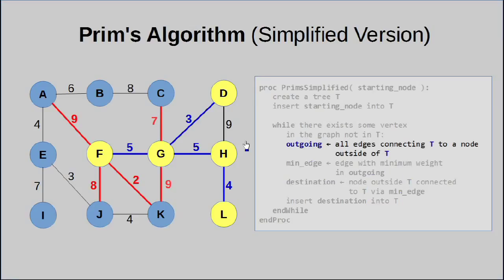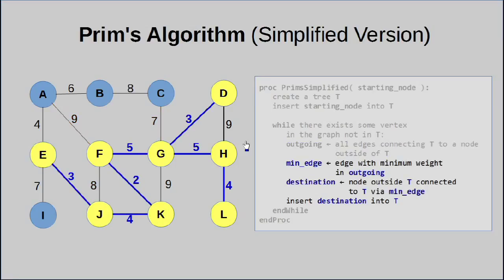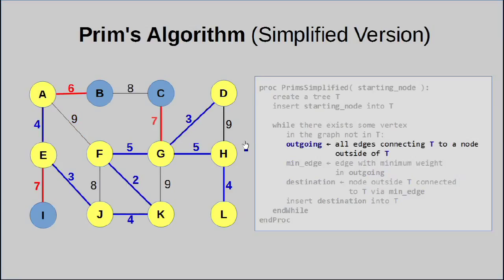The whole idea is we pick the smallest edge every time. And as a result of doing this, we end up picking the edges that lends itself to generating a minimum spanning tree.